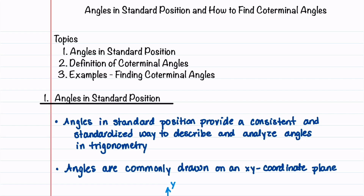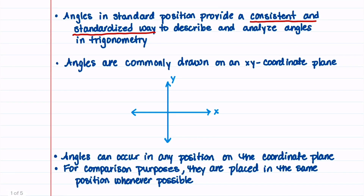Let's begin by talking about angles in standard position. Angles in standard position provide a consistent and standardized way to describe and analyze angles in trigonometry. Angles are commonly drawn on an XY coordinate plane. Angles can occur in any position on the coordinate plane, but for comparison purposes, it's good if they're placed in the same position whenever possible. The name for that same position is called standard position.